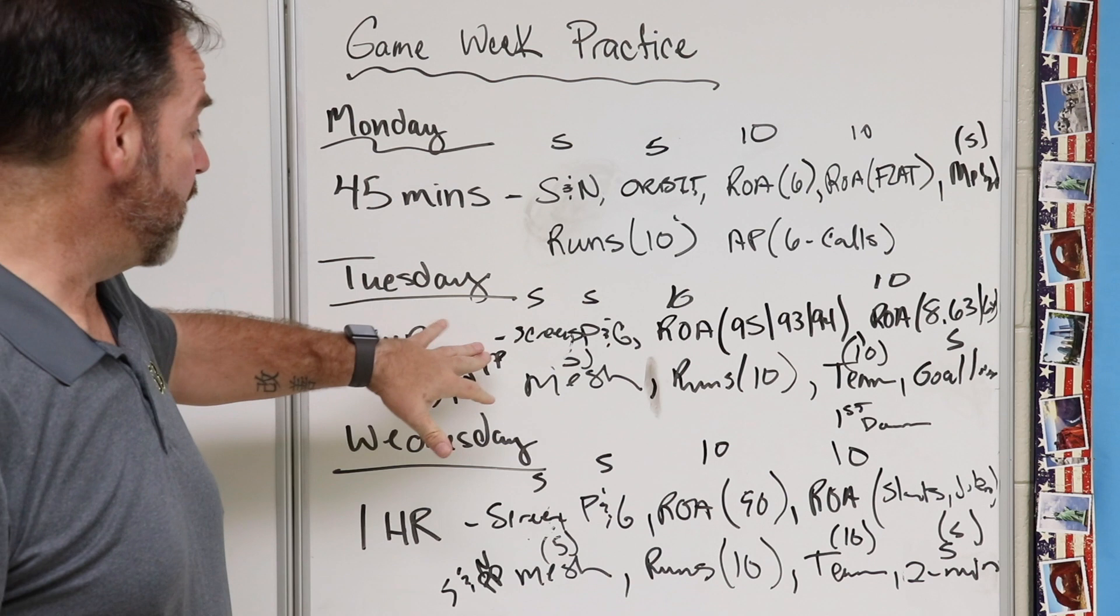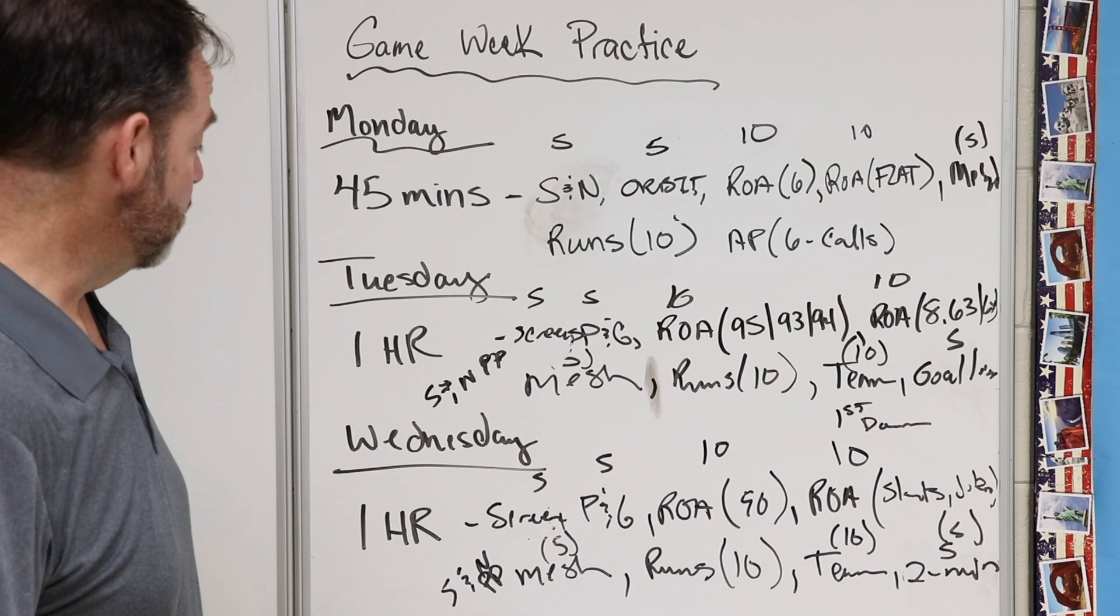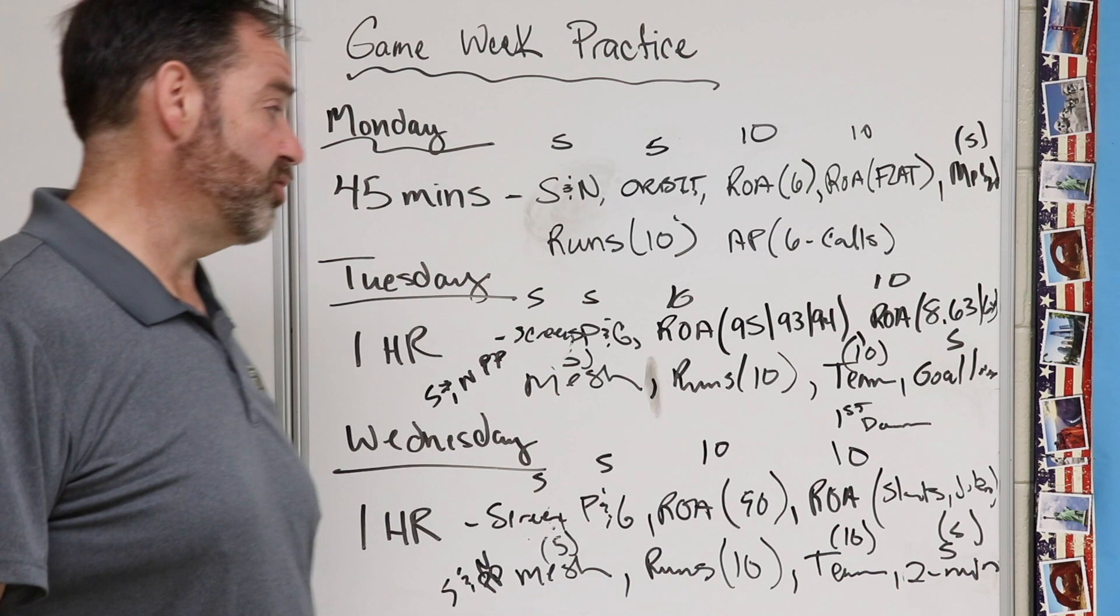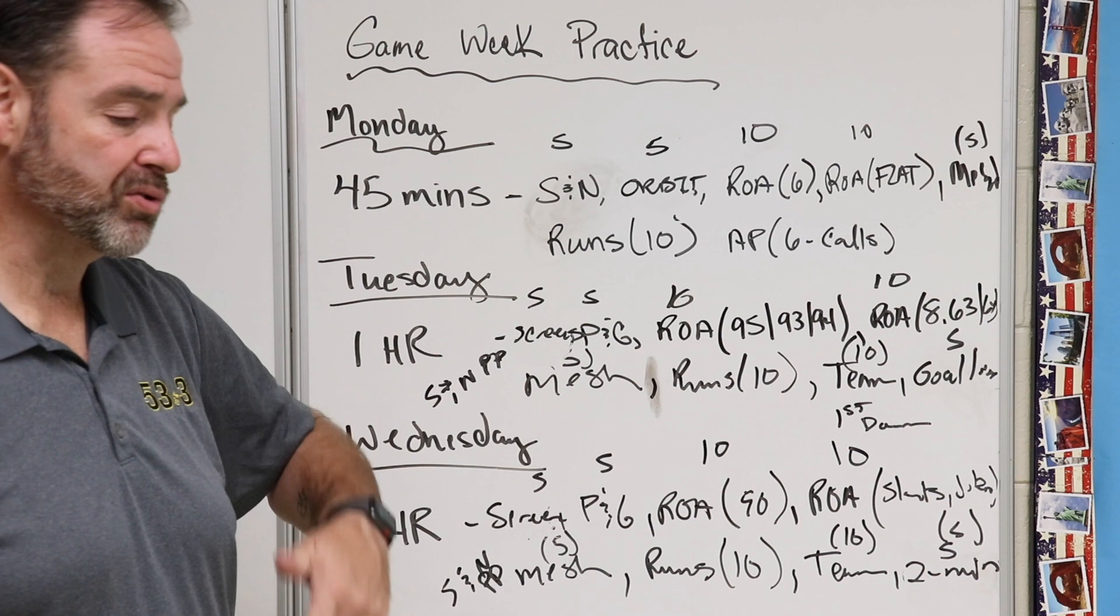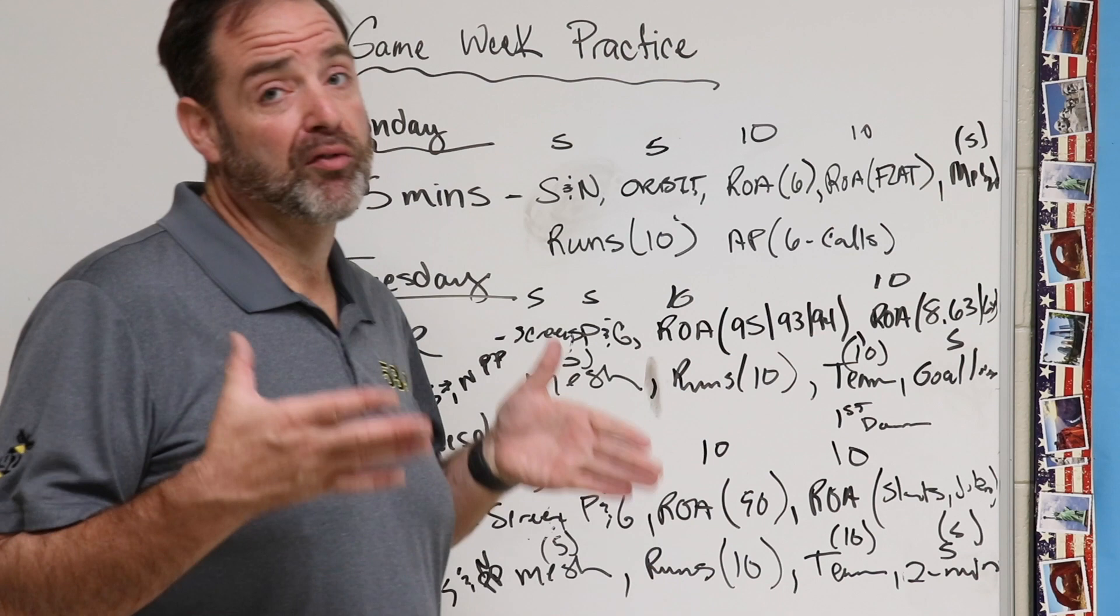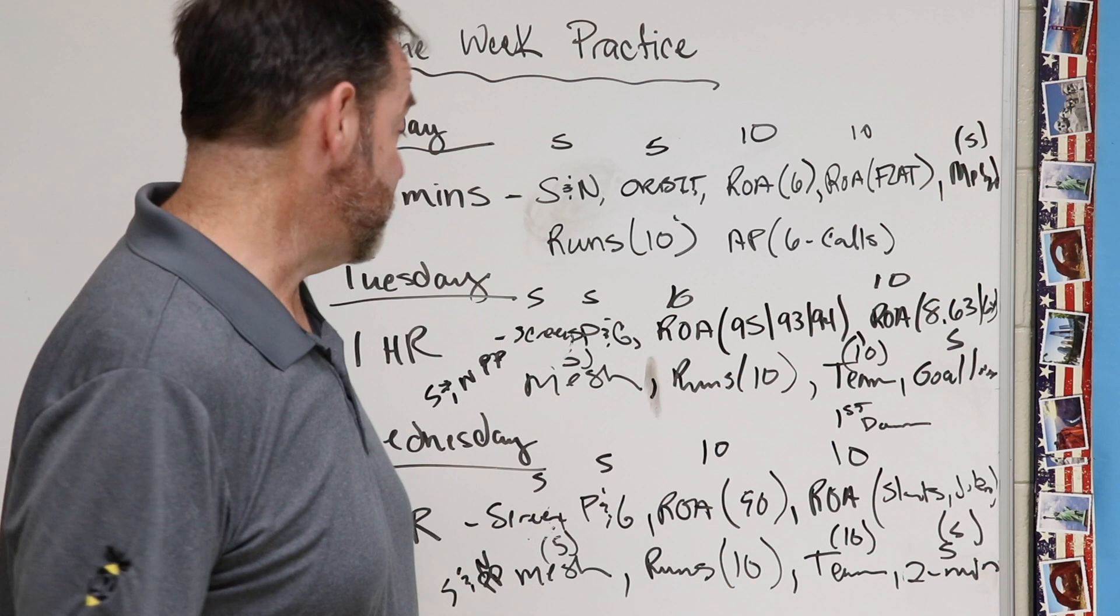But what we do first is the first five minutes we'll do a screen period. We'll do team screens to kind of get the blood flowing a little bit. Then we'll go to pat and go. We'll do wraps on air, 95, and sail, cross and sail. And then we'll do corner and stick in our quick game, and then we'll have our mesh period, which is usually flip and some other little stuff like that. And then we'll do 10 minutes a run, 10 minutes a team, and we'll focus on first down in team on Tuesday, and then we'll do a five-minute goal line period. That's kind of our special situation.